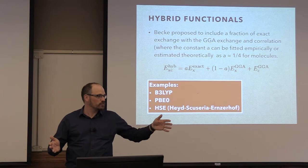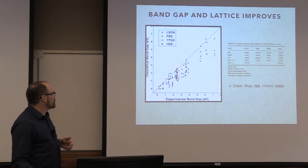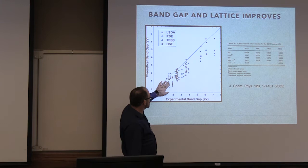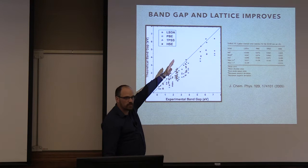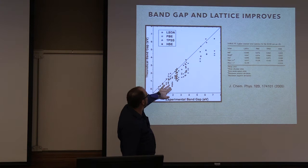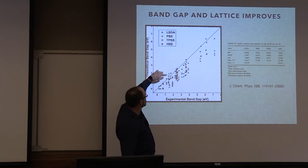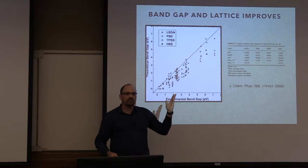All the LDA results — in the experimental versus theoretical graph that should be on the bisector for a perfect match — are underestimated. PBE is a little bit better. And then there is HSC, the hybrid functional with exact exchange — almost perfect match. These are the kinds of graphs you want to look at when deciding which functional to use. TPSS, by the way, is a meta-GGA that also uses the kinetic energy.